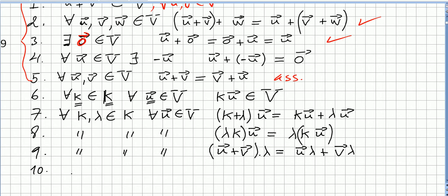Axiom ten, the last one: for any vector u in the vector space there is a scalar that we call one in the field of scalars, where one times vector u is the same as vector u. This is the multiplicative identity scalar.